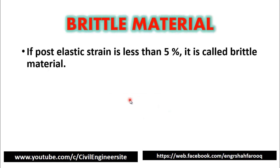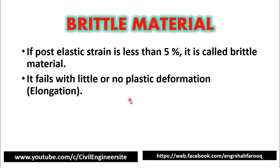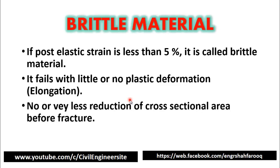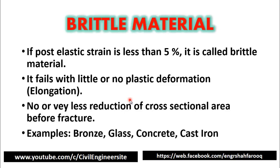If post-elastic strain is less than 5%, the material is brittle. Brittle material fails with little or no plastic deformation, and there is no or very little reduction of cross-sectional area before fracture. Examples of brittle materials are bronze, glass, concrete, and cast iron. These materials fail abruptly without undergoing any plastic deformation.